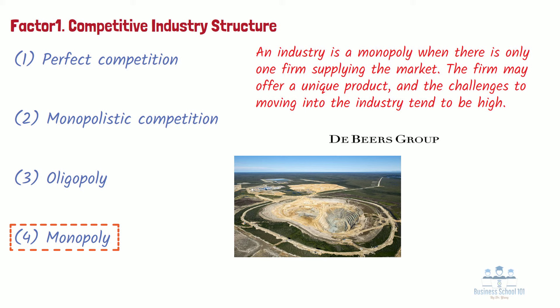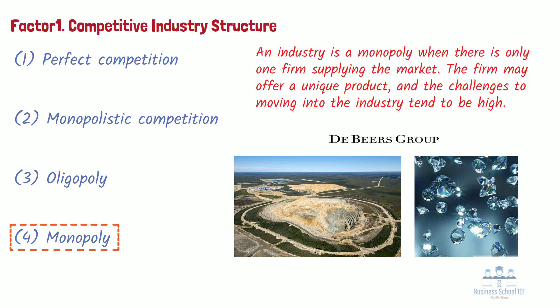De Beers had a monopoly over the production of diamonds for most of the 20th century, and it used its dominant position to manipulate the international diamond market. It convinced independent producers to join its single channel monopoly.